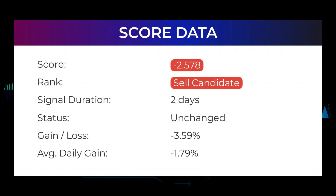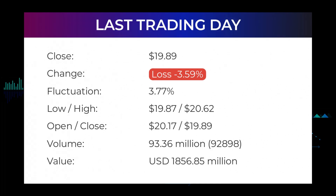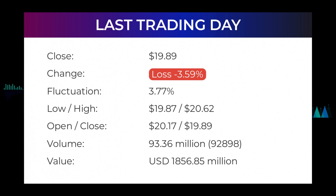In this section you will get some information about the current Ford Motor performance. In our systems the Ford Motor stock currently holds a minus 2.578 score, and our system has ranked Ford Motor a sell candidate since February 2nd 2022. In this period the stock has had a loss of minus 3.59%, an average return of minus 1.79% per day. Our last headline reads: red day on Thursday for Ford Motor — the stock price fell by minus 3.59% on Thursday February 3rd 2022, from $20.63 to $19.89, and has now fallen three days in a row.